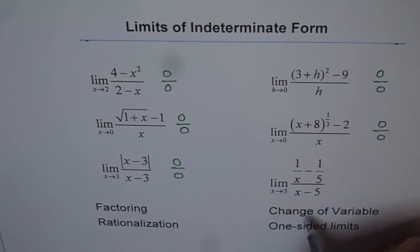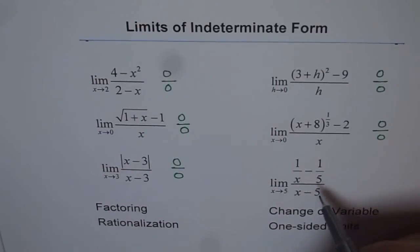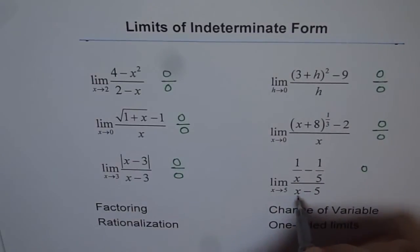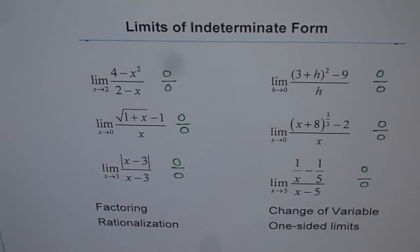The last one, x is approaching 5. If I plug in 5, the limiting value here in the expression, I get 1 over 5. 1 over 5 minus 1 over 5 is 0, and 5 minus 5 is also 0.